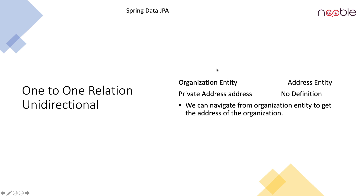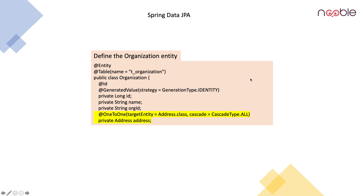To summarize, we have the organization entity and the address entity. Here in the organization entity, we will be defining the private address of type address, and there won't be any definition in the address entity. We can navigate from the organization entity to get the address of the organization. Now let us define the organization entity. Here we have the @Entity annotation followed by @Table where the name is specified as t_organization, public class Organization, @Id, @GeneratedValue, strategy equal to GenerationType.IDENTITY. And we have the long ID which is the primary key, along with the two fields name and orgId, and the main one which is the address of type Address.